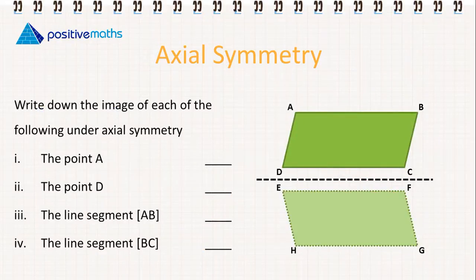For the next activity, we're going to write down the image of each of the following under axial symmetry. So the image of the point A, we want to be careful, it's not E. The image, if we fold it over, A will fall on H.